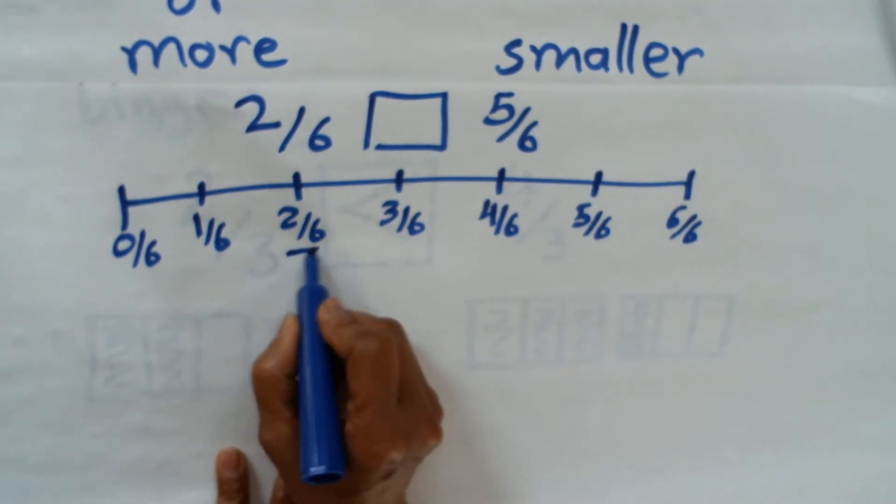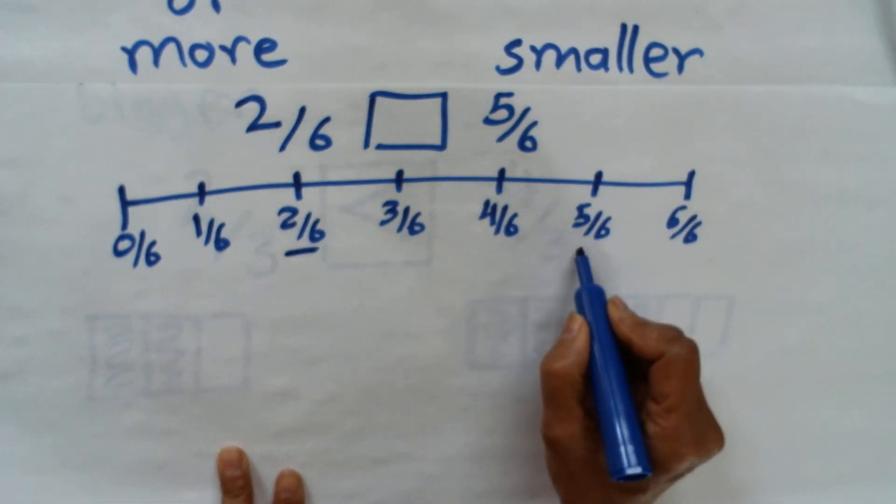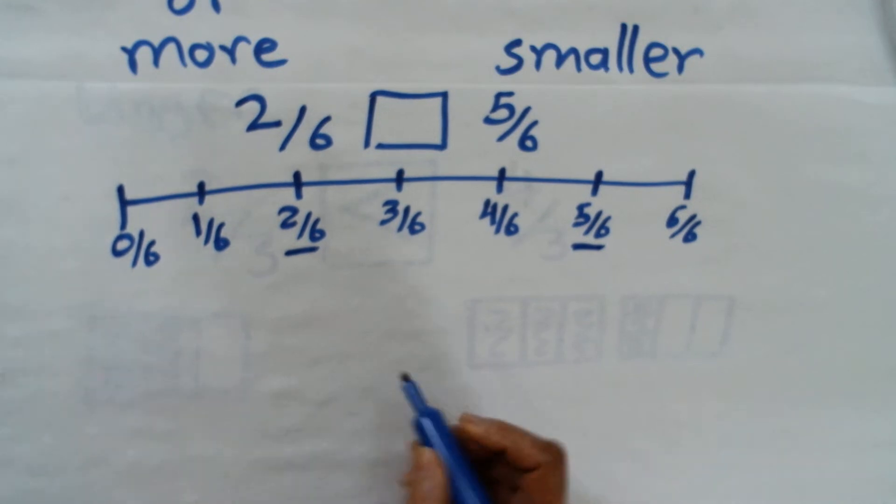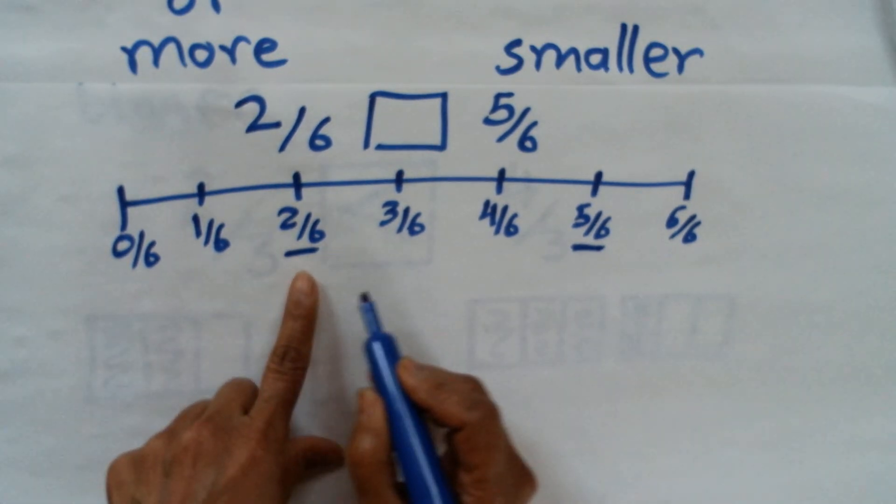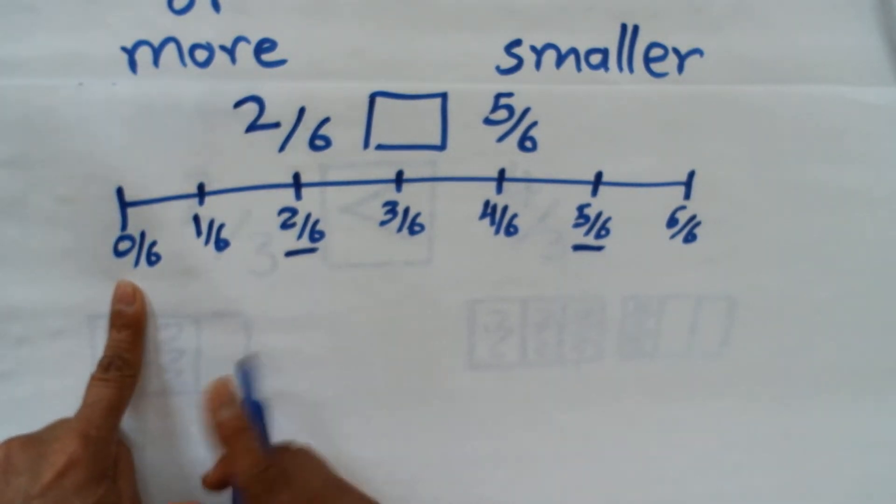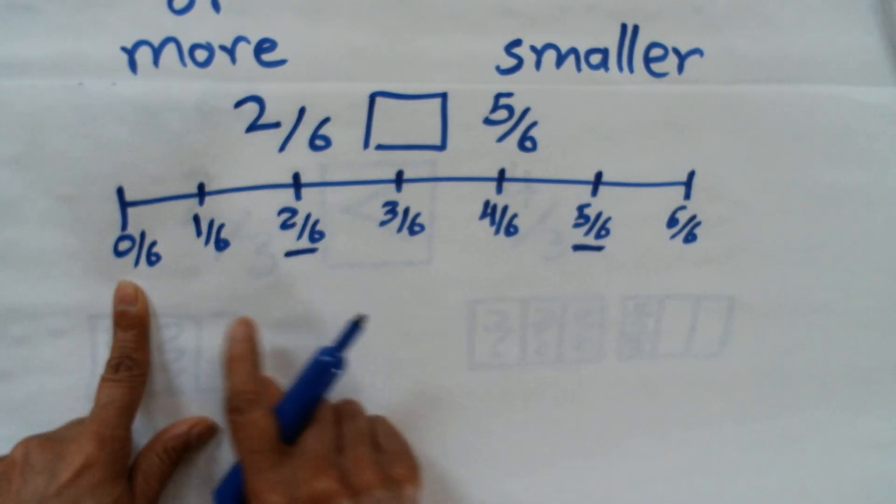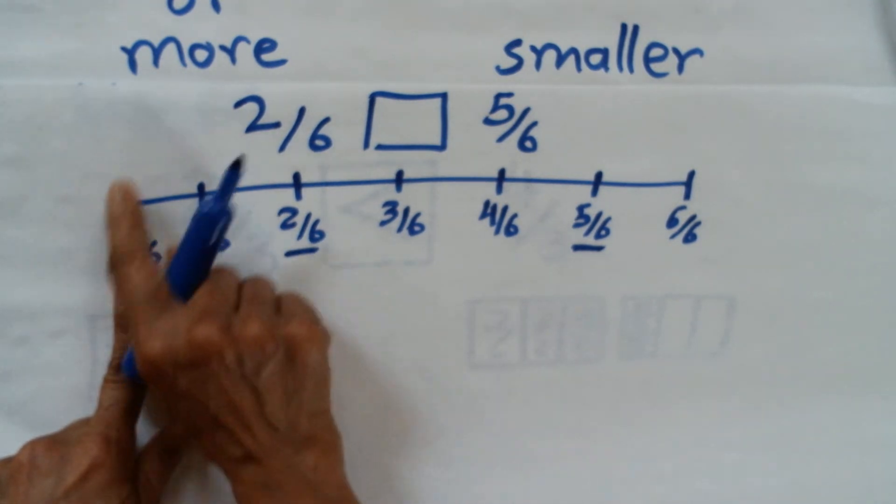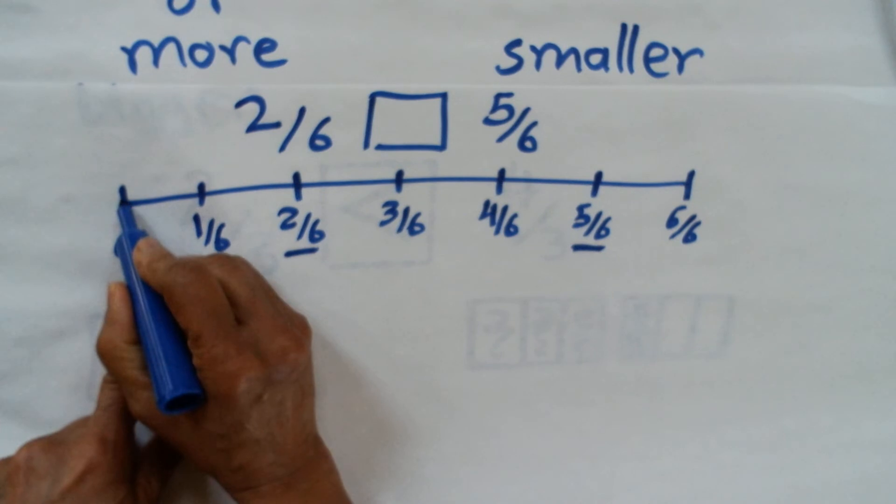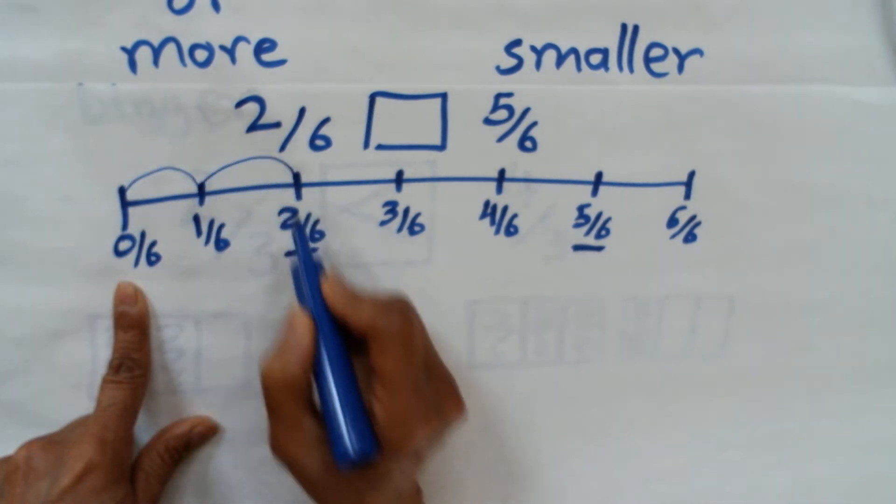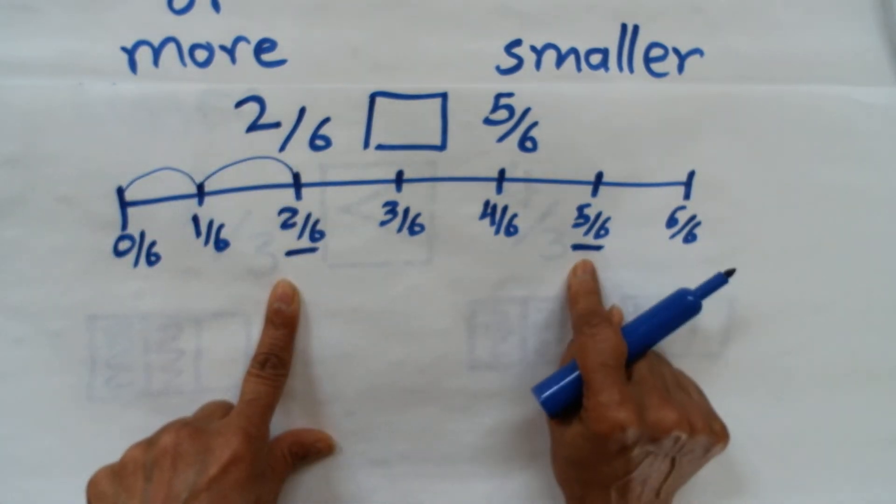2/6 is here, and 5/6 is here. Now you have to find how far it is from 0. For 2/6, I have to make 2 jumps to reach 2/6.